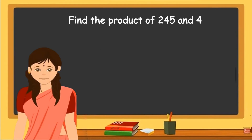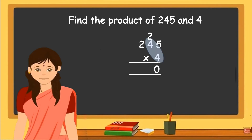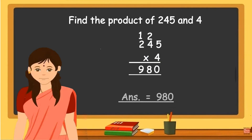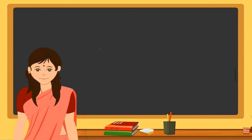Now let us find the product of 245 and 4. Write the multiplicand 245 into the multiplier 4. Start with 4 into 5 equal to 20 — carry over 2 and write it above 4 in the tens place. Then multiply 4 into 4 equal to 16, plus the carry over 2, equal to 18. Write 8 in the tens place and carry over 1, writing it above 2 in the hundreds place. Finally, multiply 4 into 2, which is equal to 8, plus the carry over 1, equal to 9. The answer or the product of 245 and 4 is 980.